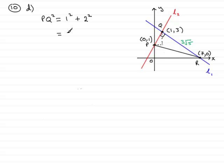Working that out we have 1 plus 4, which is 5, so PQ squared is 5, so therefore the length of PQ must be the square root of 5.